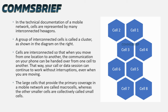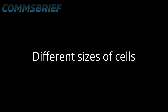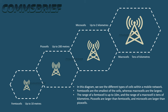The large cells that provide primary coverage in a mobile network are called macro cells, whereas the other smaller cells are collectively called small cells. In this diagram we see the different types of cells within a mobile network. Femto cells are the smallest, with a range of up to 10 meters, and macro cells are the largest, with a range of tens of kilometers. Pico cells are larger than femto cells, and micro cells are larger than pico cells.